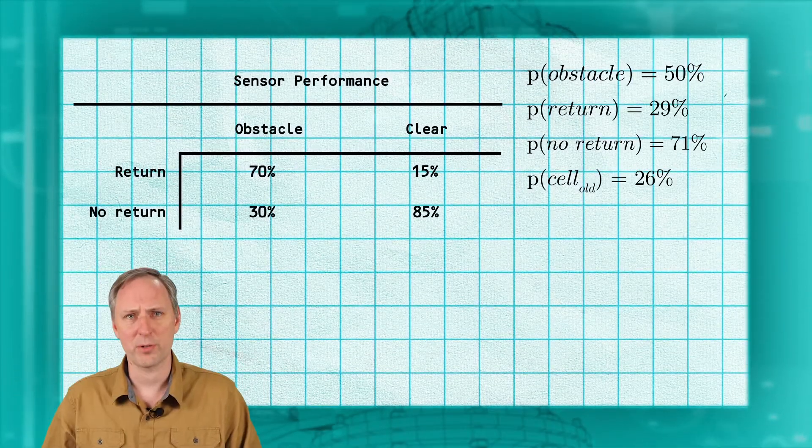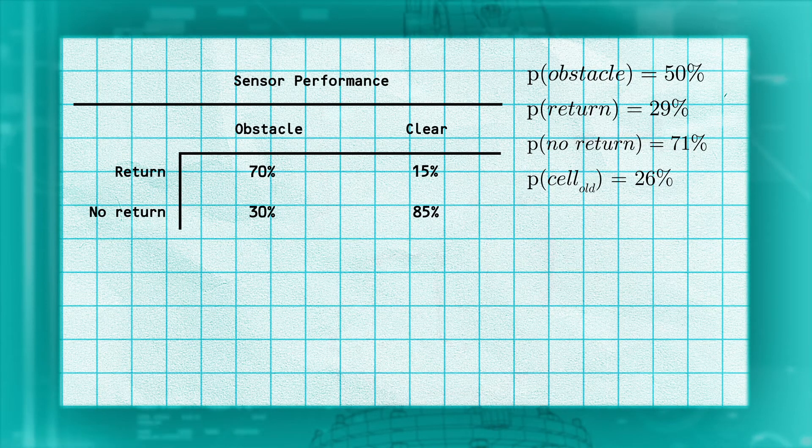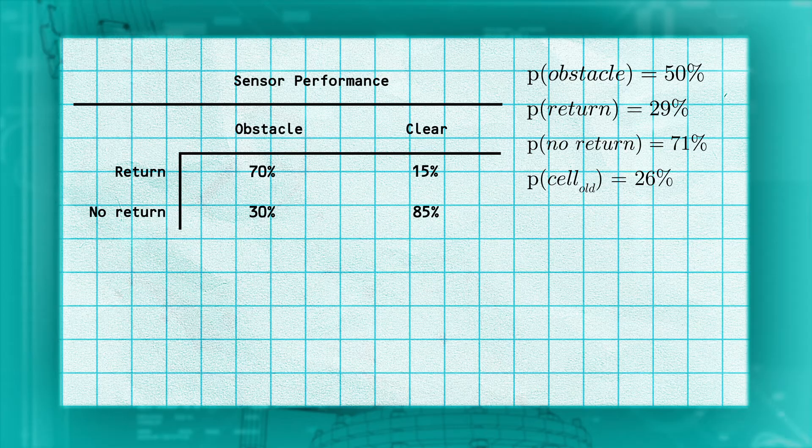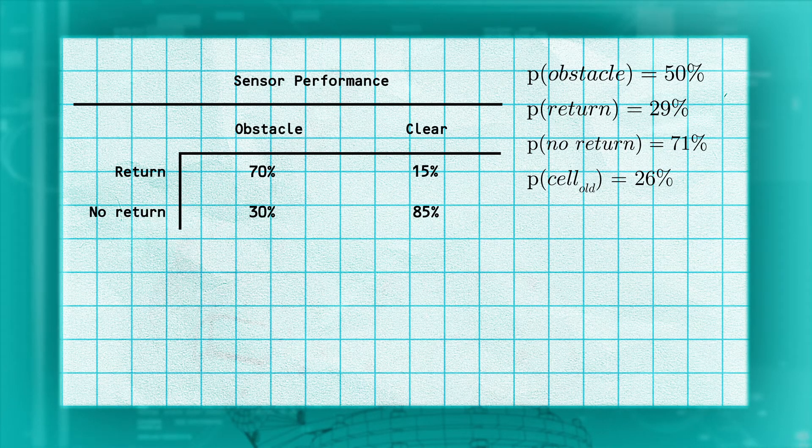If we were to have another beam go through the same cell in the future, we would perform the same process. But instead of starting at our initial value of 50% for the cell value, we would use the new value of 26%. In this case, a second measurement showing no return would cause the probability to drop further to 11%.